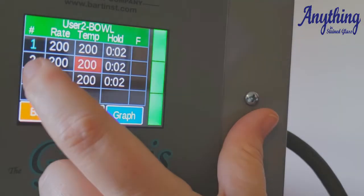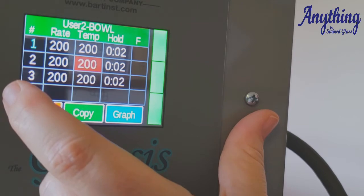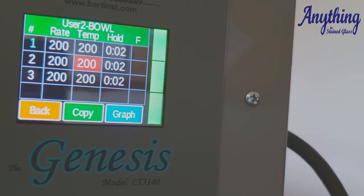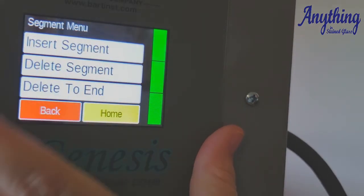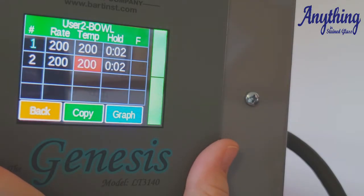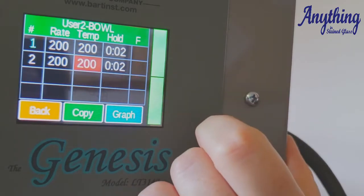You insert a segment. It will insert above the line that you chose. So now we have a three-segment program. Again, you can delete a line too. Delete segment. There it goes. Now we're back at two. So in order to program this, you simply touch the one that you want to program.